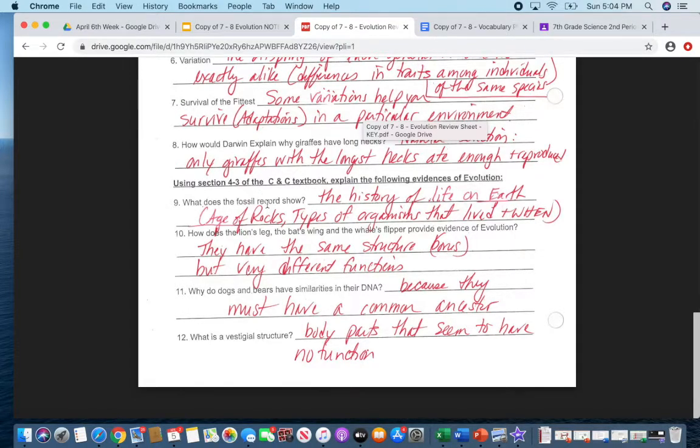Remember, fossil record. What does it show? Okay, number nine. Fossil record shows that there have been many, many, many different types of species out there over millions of years. However, over 90% of them have gone extinct. Again, remember, extinct means they're no longer living. Any of the species. A fossil record shows that the history of life on Earth.